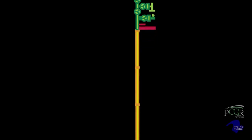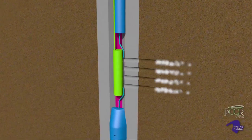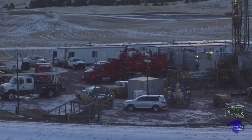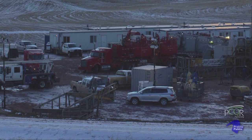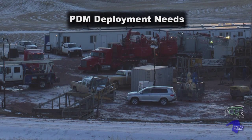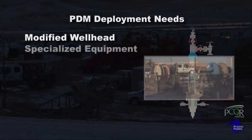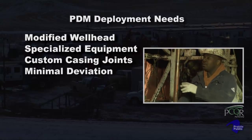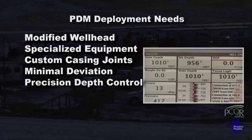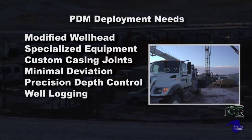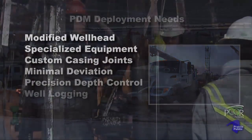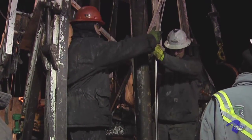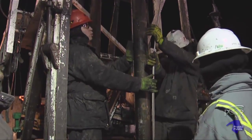Once the well is cemented and the wellhead attached, the perf charges are fired. PDM deployment requires trained technicians, special care, and coordination among several contractors beyond a normal installation. In addition to the PDM system, deployment needs include modified wellhead components, specialized equipment, custom fabricated casing joints, a wellbore with minimal deviation, precision depth control of casing placement, and additional well logging to confirm that the equipment is accurately placed. PDM deployment may double the time needed to case the well because of the care needed to ensure that all equipment and connections remain intact.